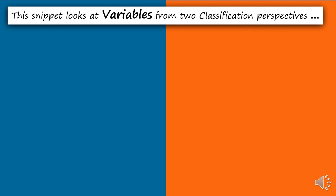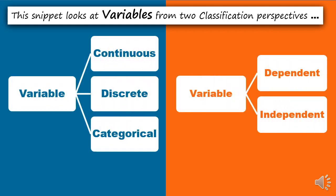Coming back to this video, there cannot be a terminology more fundamental than variables in the stream called analytics. This snippet looks at variables from two classification perspectives: we will divide the space into continuous, discrete, and categorical variables, and then again divide the same space into dependent and independent variables.